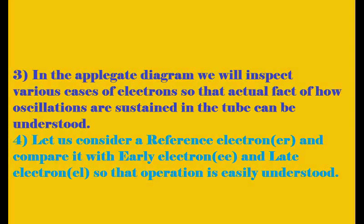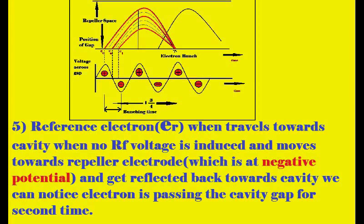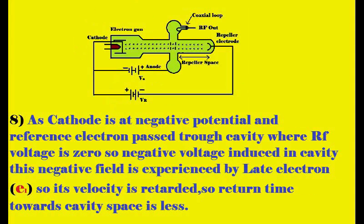The reference electron travels toward the cavity when RF voltage is zero. In the Applegate diagram, the reference electron's position is at the zero crossover of the gap voltage — there is no effect on this electron by RF voltage. It travels toward the repeller electrode and gets reflected back toward the cavity for the second time.